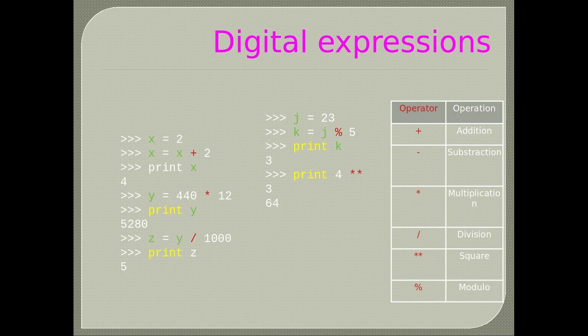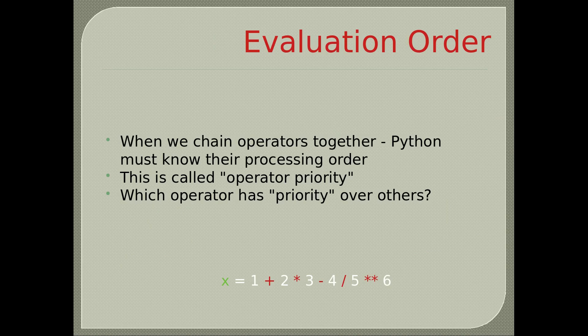Type print 4 ** 3 (4 to the power of 3). Evaluation order: when we chain operations together, Python must know their processing order. This is called operation priority.